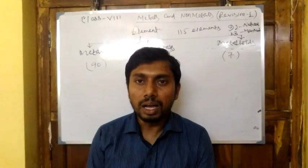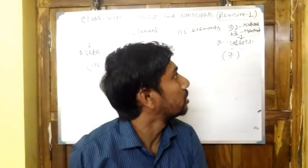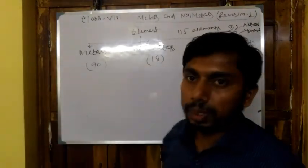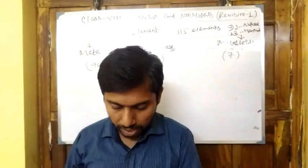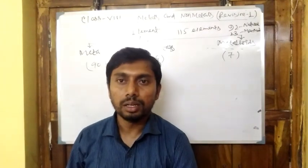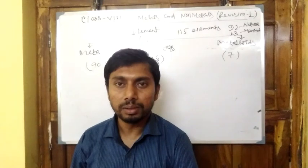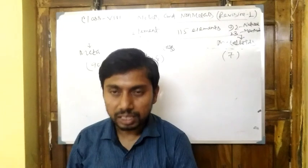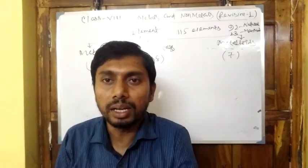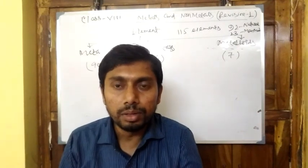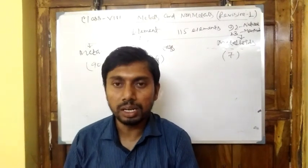Now the definition of metal. A solid material which is typically hard, shiny, malleable, ductile, and sonorous, with good conductor of heat and electricity, is known as metal. So materials which are typically hard, shiny, malleable, ductile, sonorous, and good conductors of heat and electricity are known as metals.